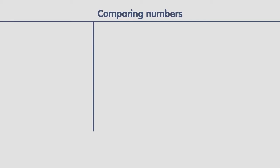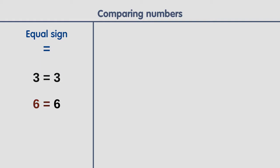When a number is equal to another number, we use the equal sign. For example, three is equal to three, or six is equal to six, or seven is equal to seven.